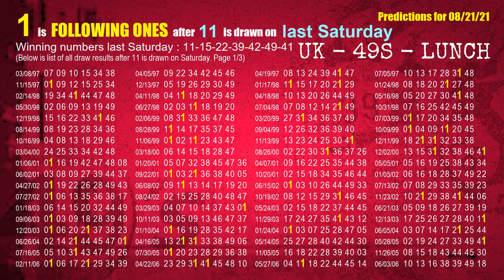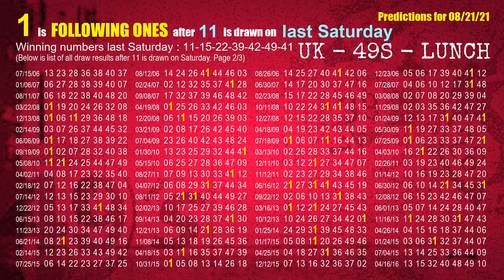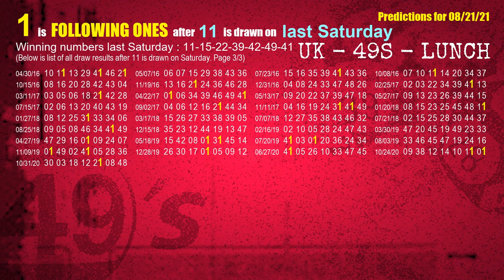After calculating following ones with today's result, we will find out following ones through the result of the same day last week. The first winning number last Saturday is 11. We list all draw results which are one week after a Saturday draw with 11 as a winning number — the most frequently following units digit is 1. We highlight units digit 1 in yellow for you.